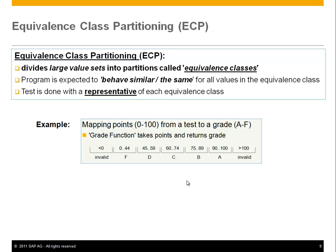Consider, for example, a function that maps points — as in points you can get in a test — to a grade supposed to be A through F. You can see below the mapping: from 90 to 100 points you get an A, from 75 to 89 you get a B, and so forth.